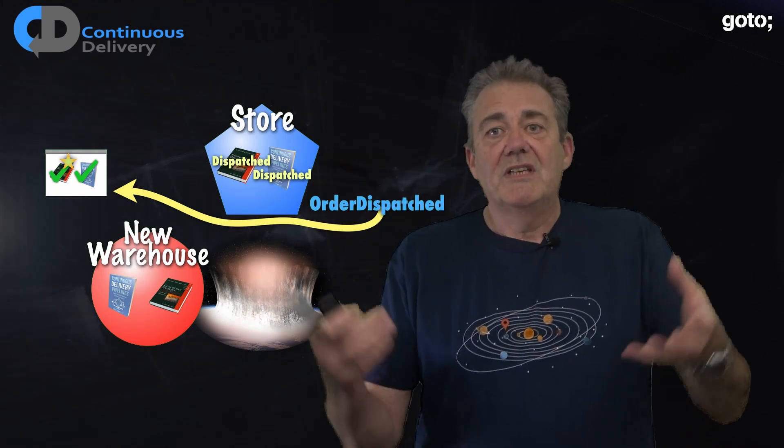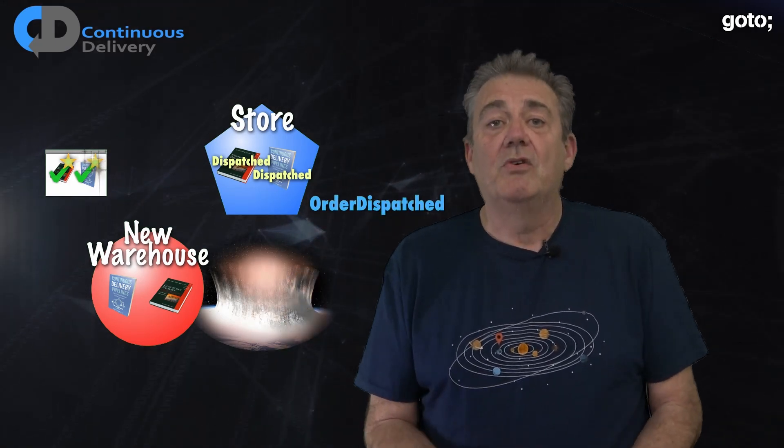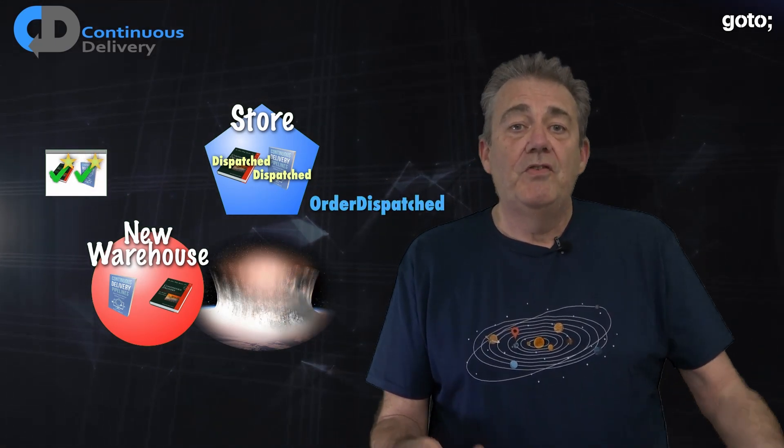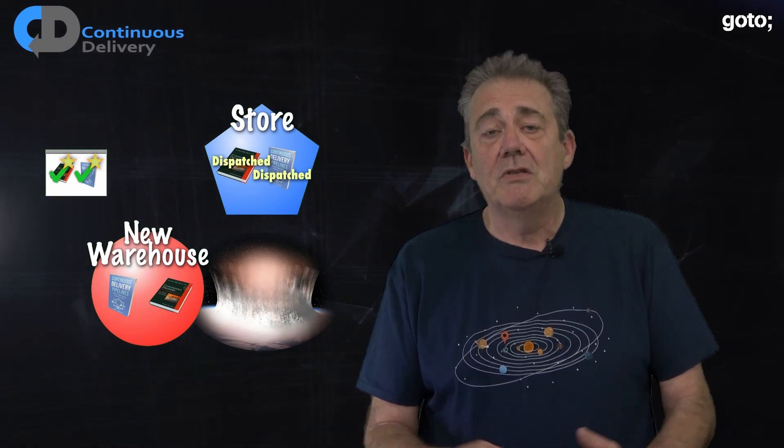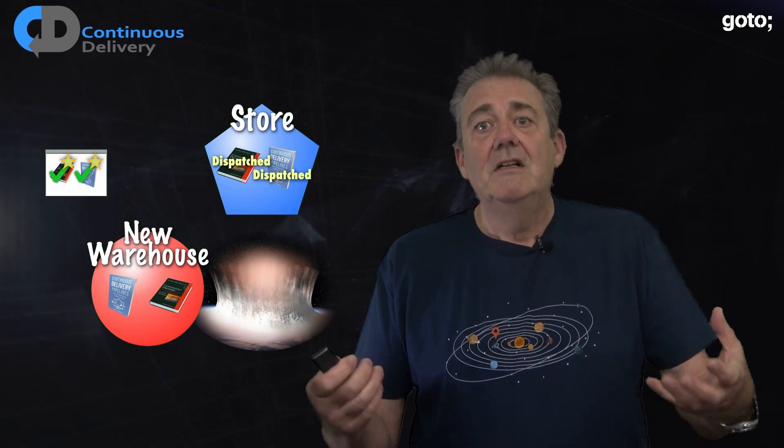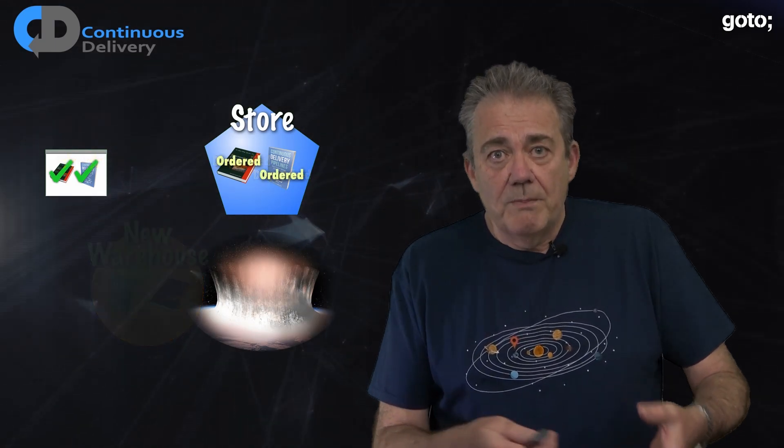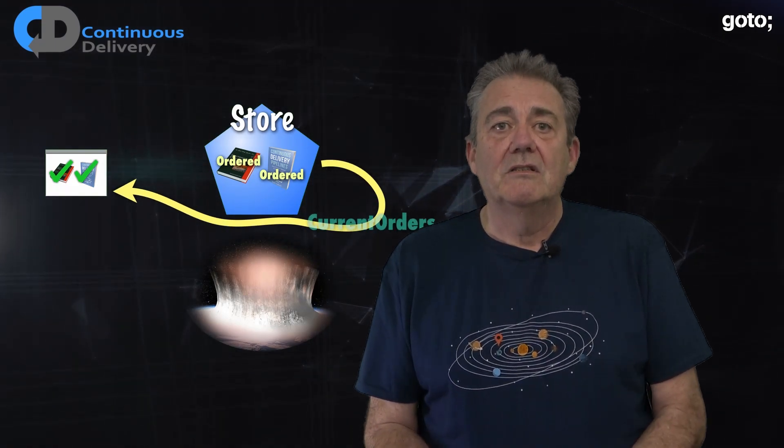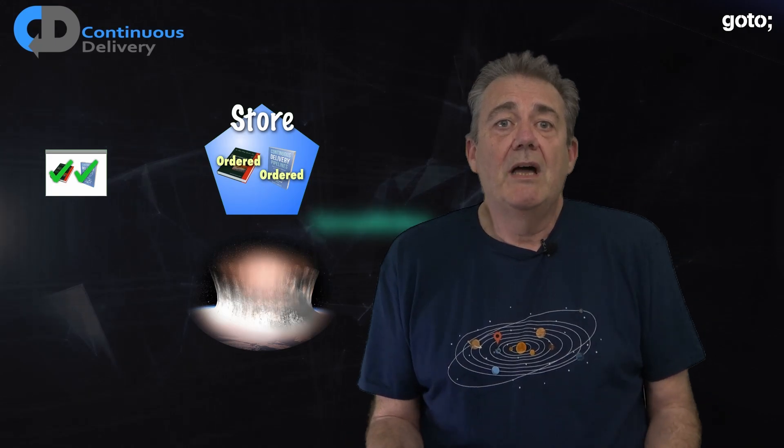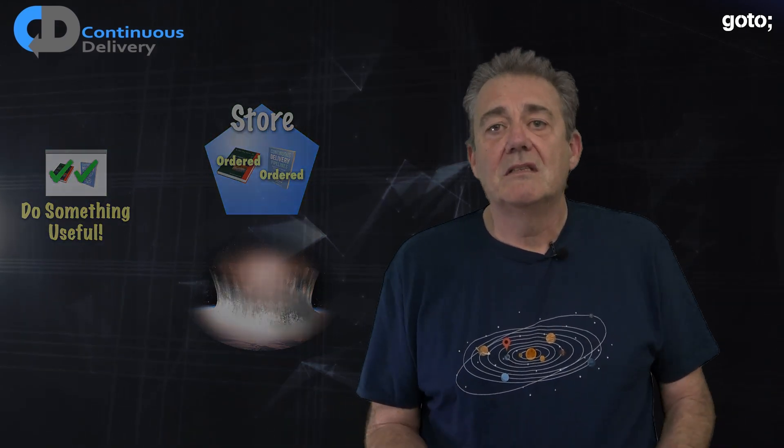Again, no special cases. Of course, in this case we may want a special case. What if we wanted to inform our customers of our interrupted service due to astronomy? Well, the store knows the orders were placed. So we can ask it for the list of orders that were ordered but not yet dispatched. Then we can do whatever we like. Send apologies for the delay or cancel the orders with our regrets. Whatever makes sense to the business.